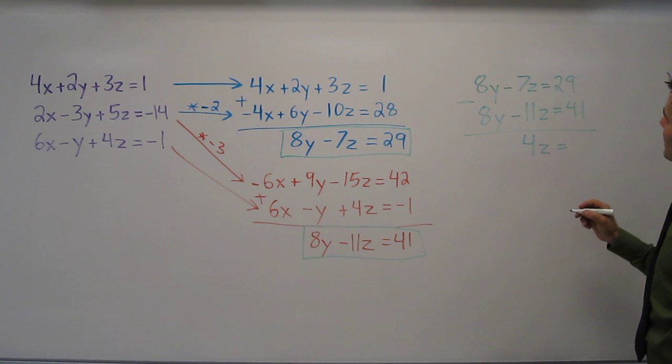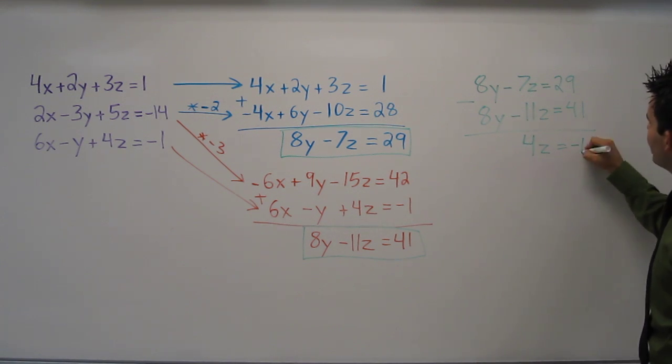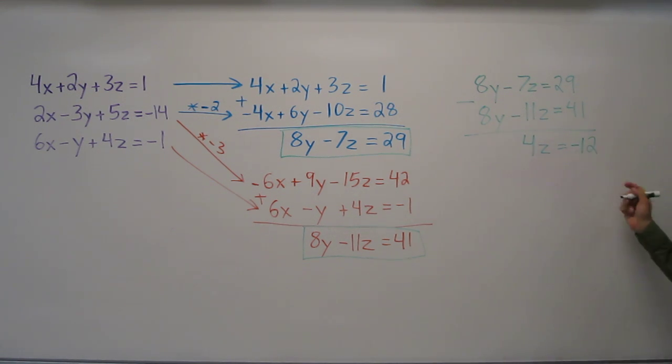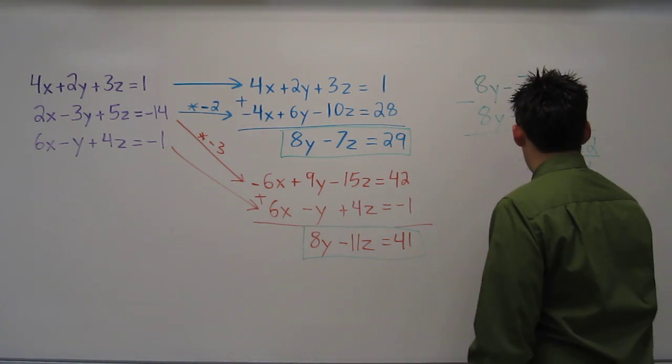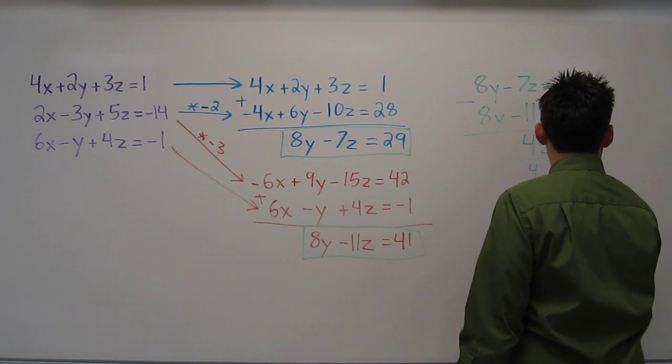And down here, looks like I'm left with negative 12. Dividing both sides by 4, I find that z equals negative 3.